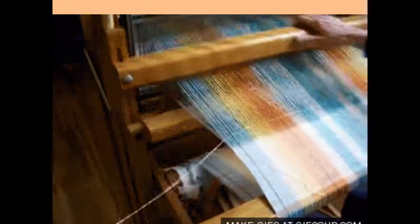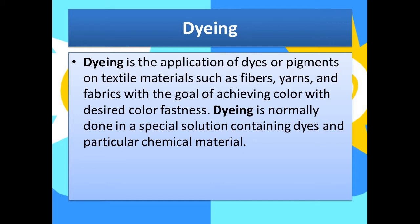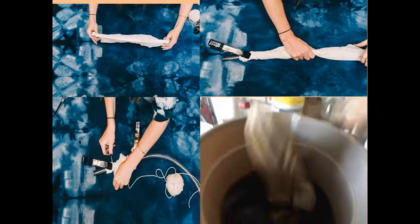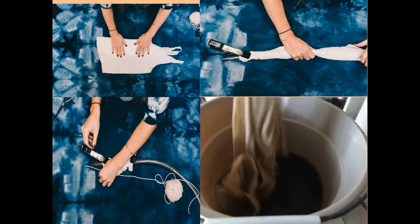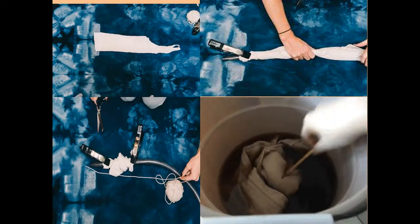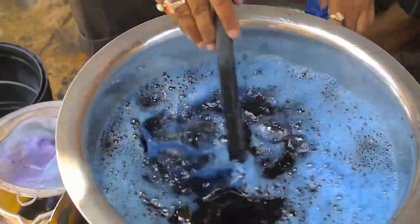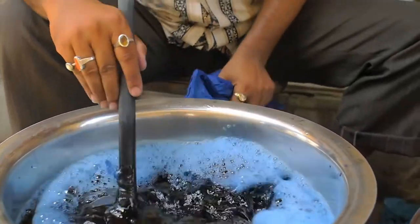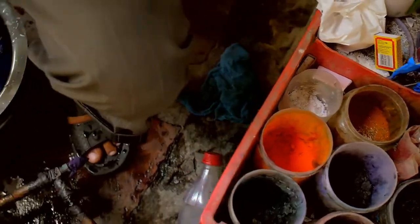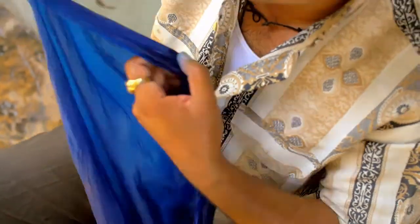The warp threads run lengthwise on the piece of cloth while the weft runs horizontally. After the cloth is ready it is taken for dyeing. Dyeing adds colors to the fabric and makes it attractive. Dyeing is the application of dyes or pigments on textile materials such as fibers, yarns, and fabrics, with the goal of achieving color with desired color fastness. It is normally done in a special solution containing dyes and particular chemical materials. To dye cloth, roll or twist a cloth piece, tie it with thread, and put it in hot water containing color — this tie-and-dye process is very famous in Rajasthan.